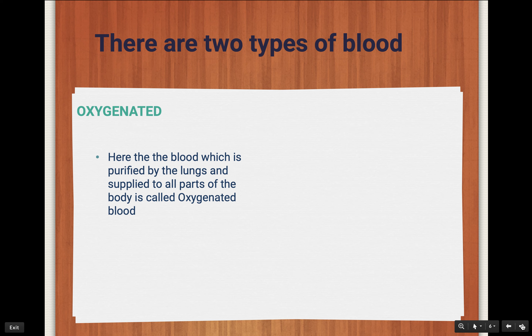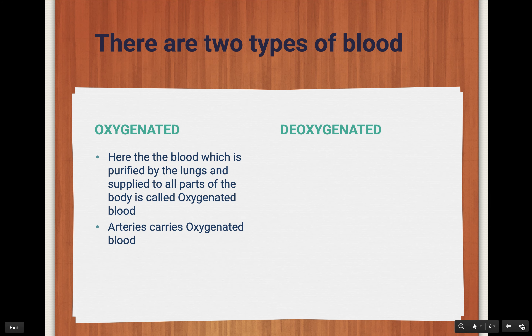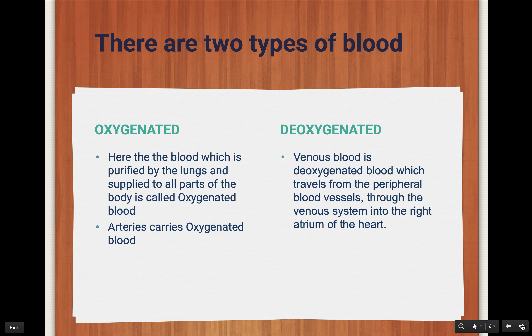There are two types of blood in our body: oxygenated blood and deoxygenated blood. Oxygenated blood is blood purified by the lungs and carried to all parts of the body. The arteries carry it to all parts of the body. So the blood vessel responsible for transportation of oxygenated blood is known as arteries.